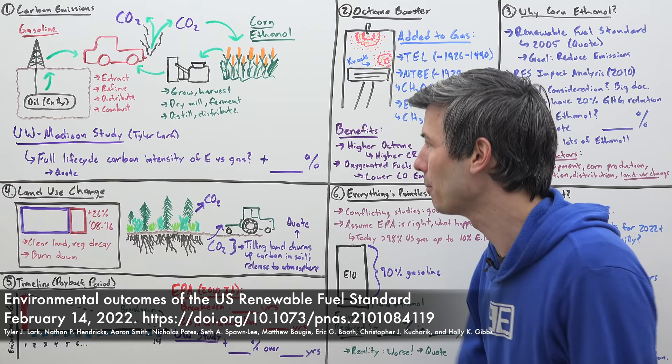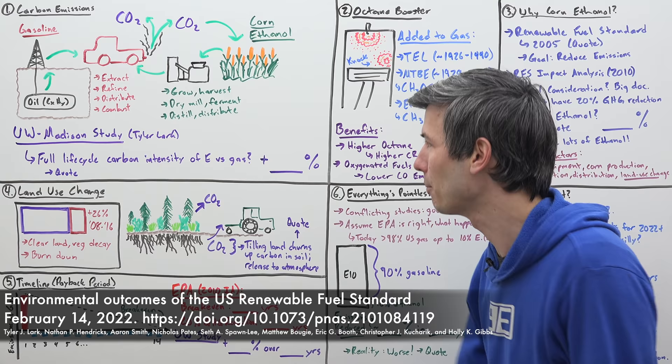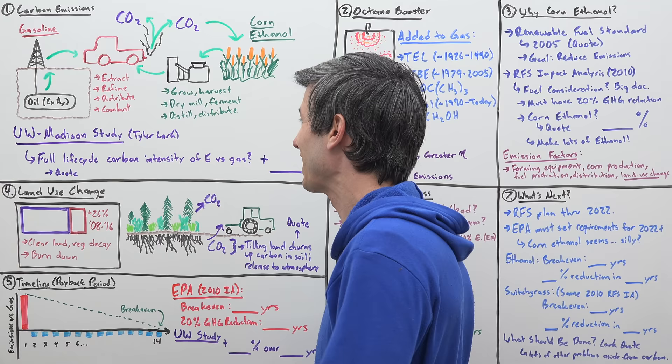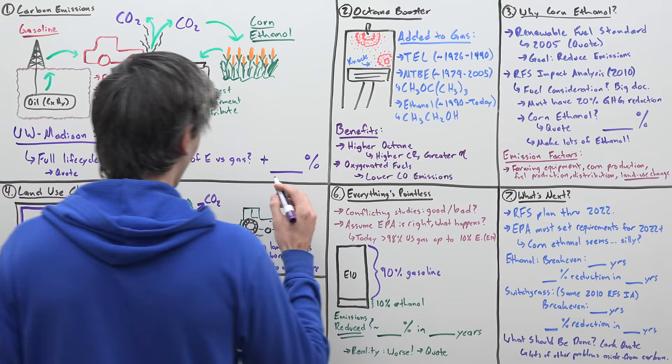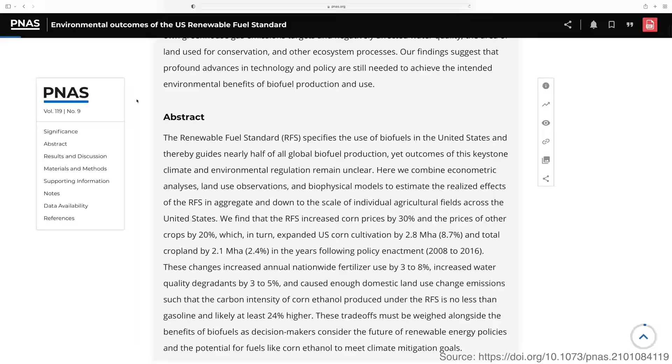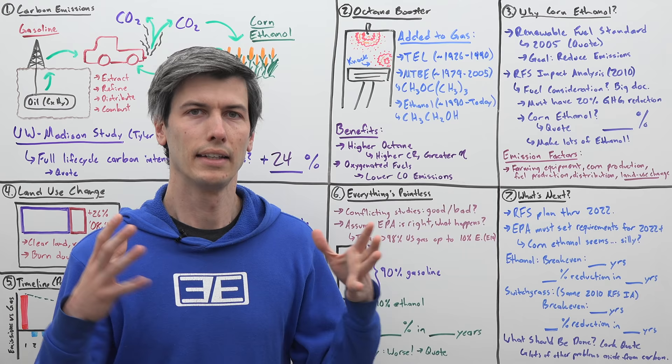Well, a study out of the University of Wisconsin-Madison by Tyler Lark, the lead author of that paper who I spoke with in preparation for this video, says that the full life cycle carbon intensity of corn-based ethanol versus gas is actually 24% greater than gasoline. This is pretty wild. So here's the direct quote from the study. The carbon intensity of corn ethanol is no less than gasoline and likely at least 24% higher.